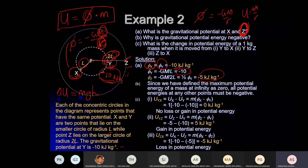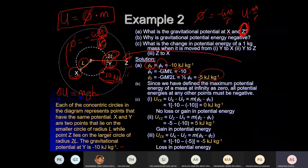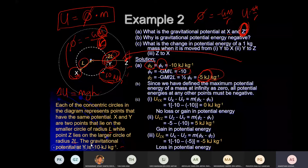Meaning: the work done to bring a unit mass from infinity to Z is –5 kilojoules. Any questions for the first part before we proceed?